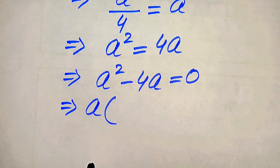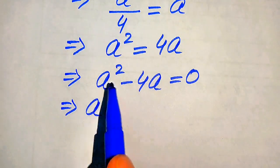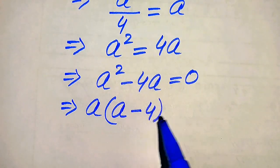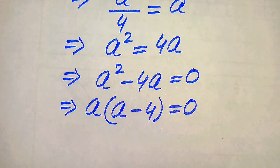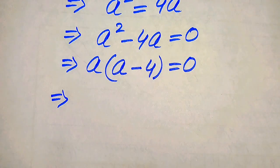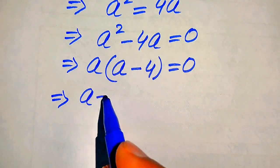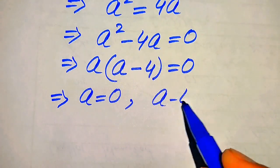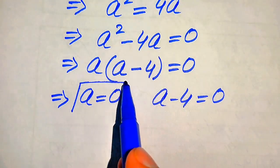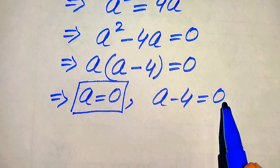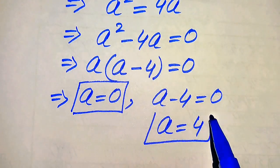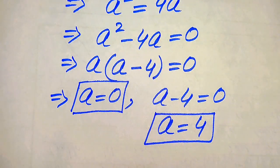Both terms involve a, so a is the common factor. Taking a as common, we get a(a − 4) = 0. We split this into two cases: the first case gives a = 0, which is the first root. The second case is a − 4 = 0, so moving −4 to the right-hand side gives a = 4, which is the second root.